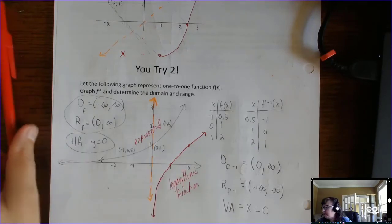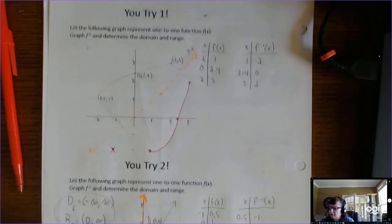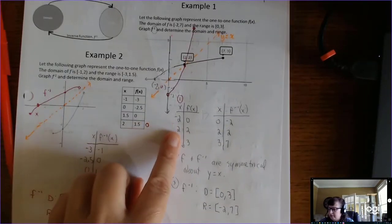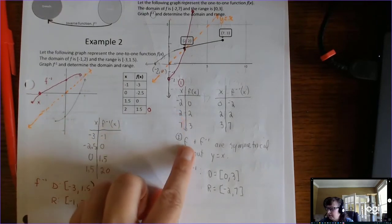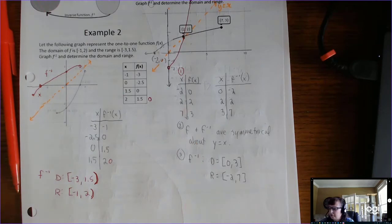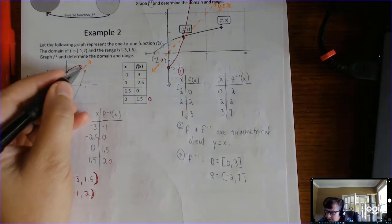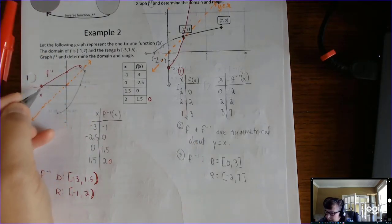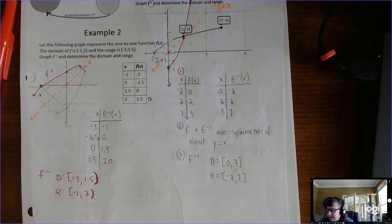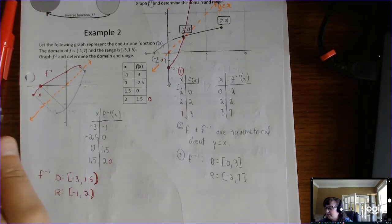That is it for inverses. Remember the three properties: one, the ordered pairs switch; two, the inverses are symmetrical about the line y equals x, and you can check your work by drawing little perpendicular lines from point to point; and three, the domain and ranges switch.